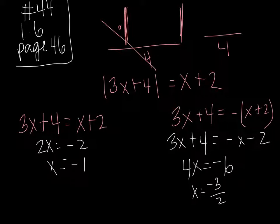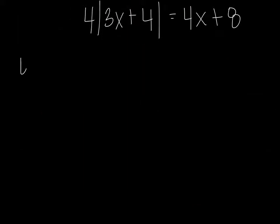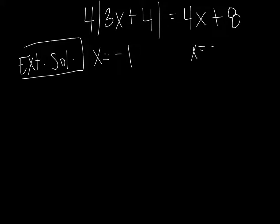Alright, with absolute value, we have to check for extraneous solutions. So that's what we're going to do here. We've got to check both x equals negative 1 and x equals negative 3 halves. We just have to make sure that when we plug these back into the original equation, they're true. Because these absolute value bars are here, sometimes that screws with our answers and we don't get true answers. We get extraneous solutions.